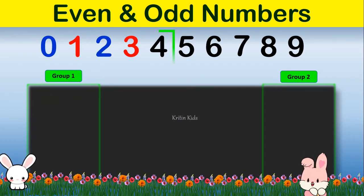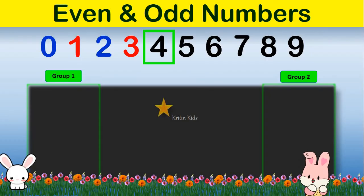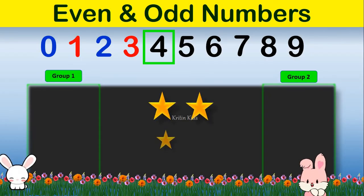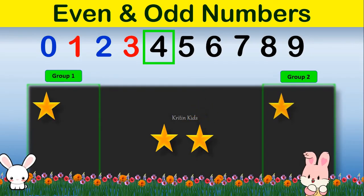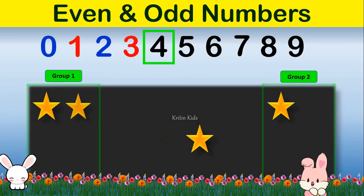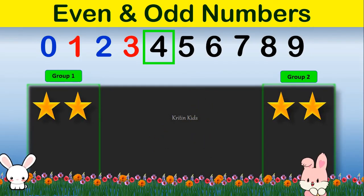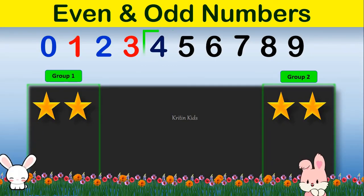Now let's go for number 4. We have 4 items; let us divide them between 2 groups. Here you can see both the groups have the same number of items, meaning number 4 is an even number.